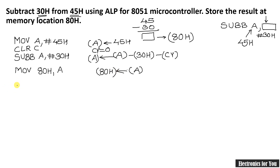That is the result. Now it is the end of the program. And for the end of program, we use this instruction — that is a loop. You can write any loop name here. I am using loop itself. Loop SJMP, or you can use AJMP also — loop SJMP loop. So this is the first program of subtraction.